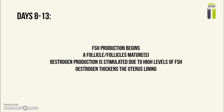From days 8 to 13, production of follicle stimulating hormone begins, which causes the maturation of a follicle in the ovary. Estrogen production is then stimulated due to the high levels of follicle stimulating hormone, and estrogen thickens the uterus lining, as well as inhibiting the production of follicle stimulating hormone. As you can see, this is an example of negative feedback.